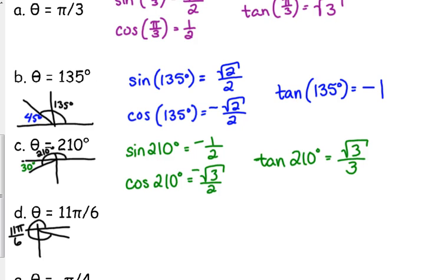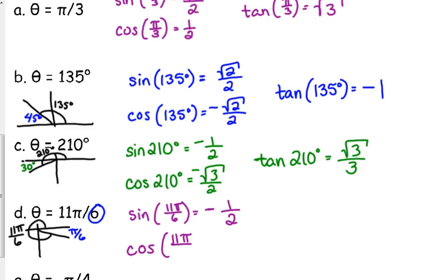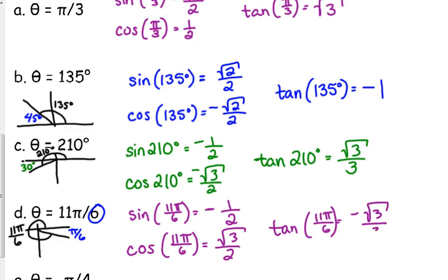11pi over 6 — you don't have to go through the process of calculating the reference angle; it's just the denominator. So the reference angle is pi over 6. The sine of 11pi over 6 is negative 1 half, because sine is negative in the fourth quadrant. The cosine of 11pi over 6 is positive square root of 3 over 2, because cosine is positive in the fourth quadrant. And tangent is negative square root of 3 over 3.